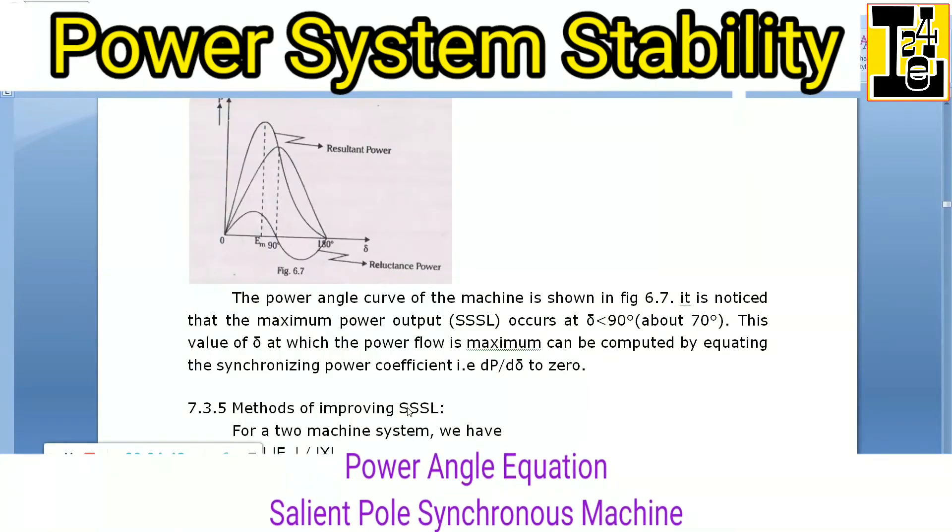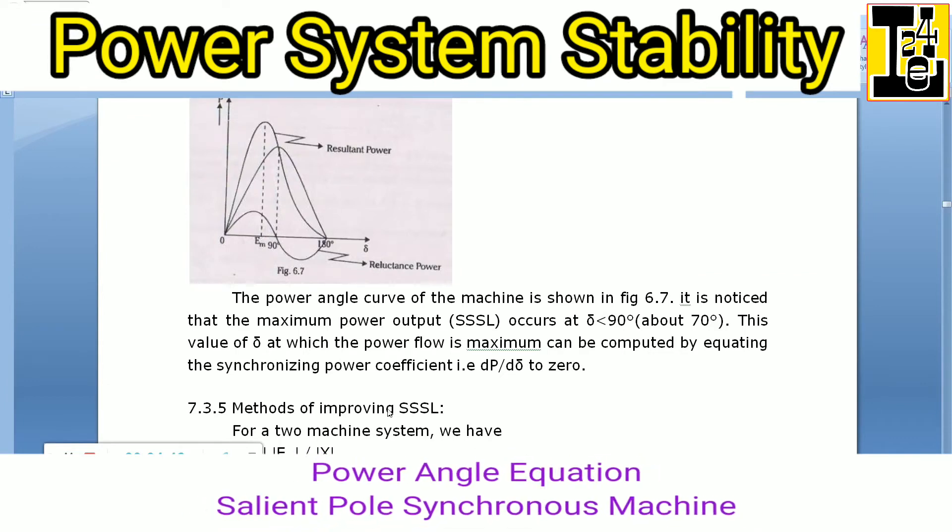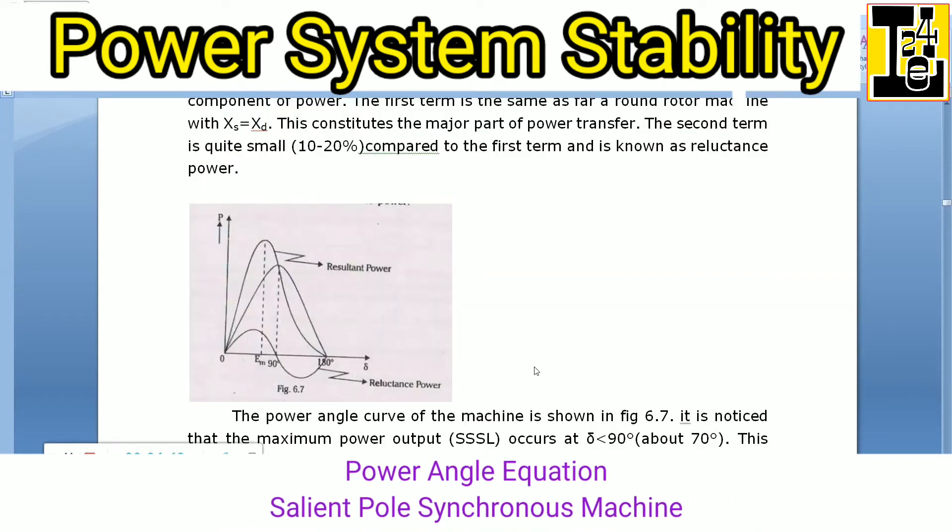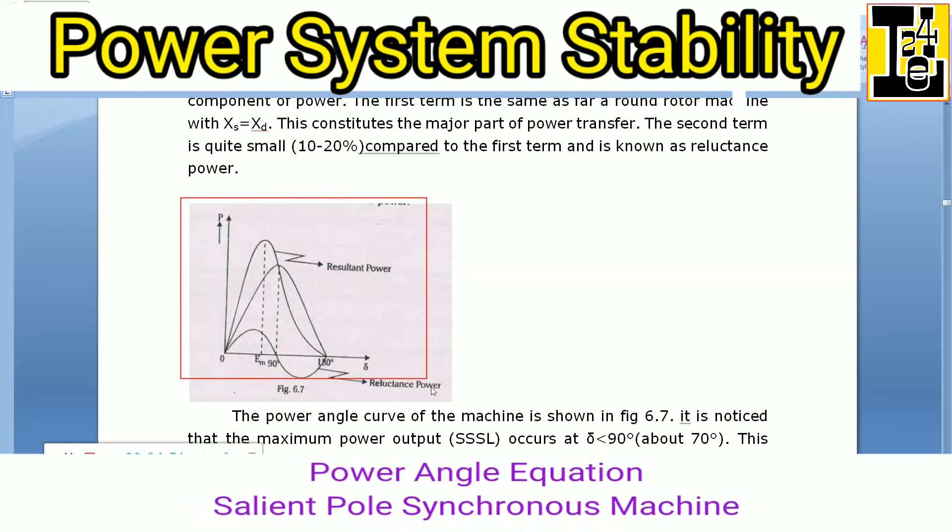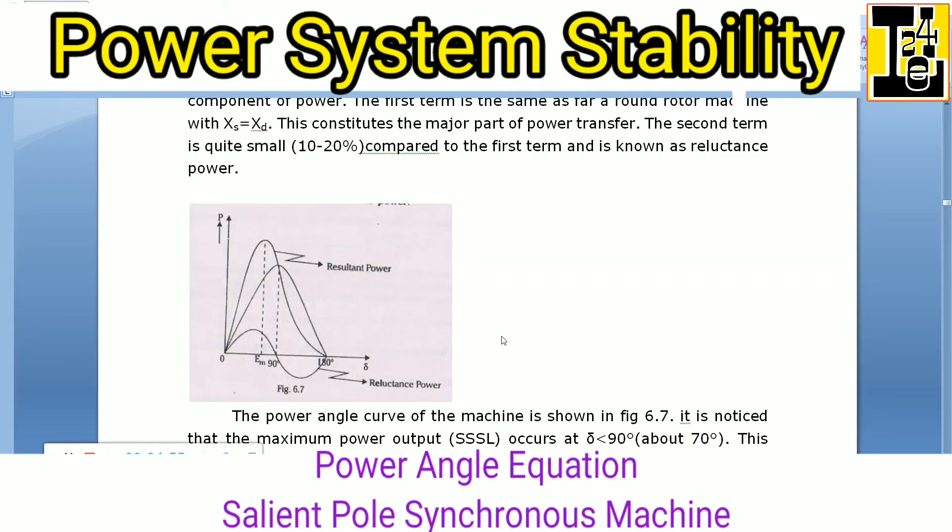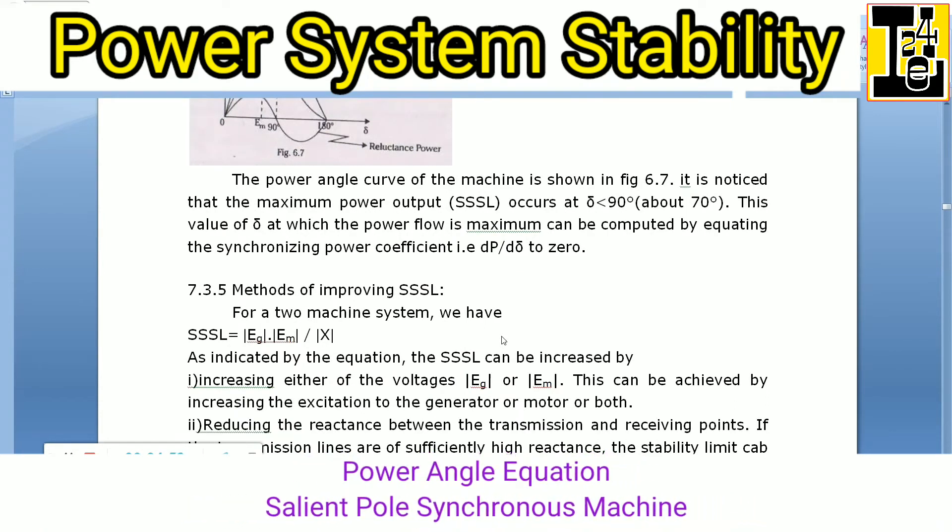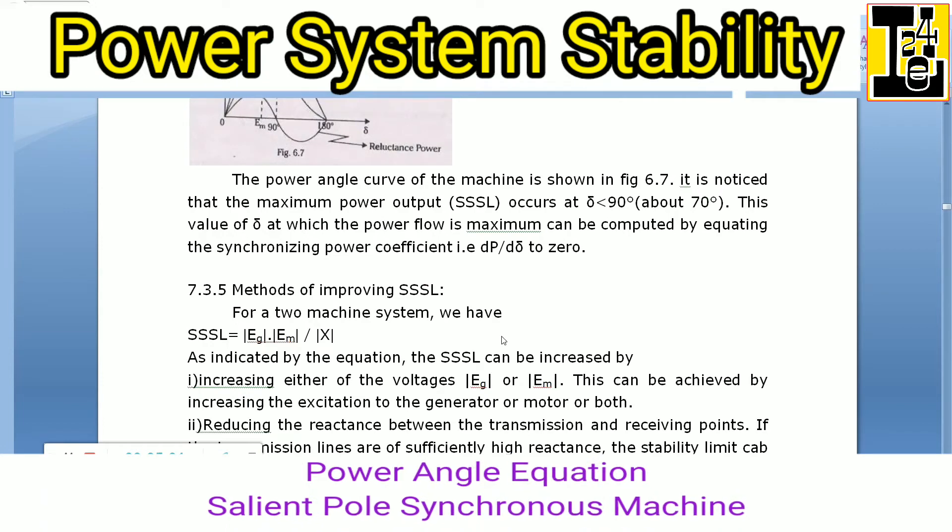This is the power angle curve of the machine. You can observe the power angle curve of the machine. It is noticed that the maximum power output (Pssl) occurs at δ less than 90°.